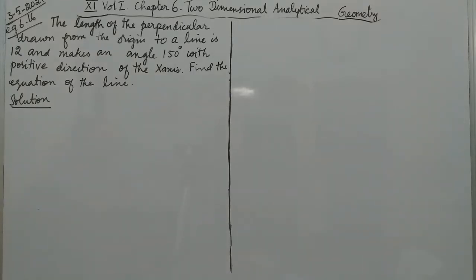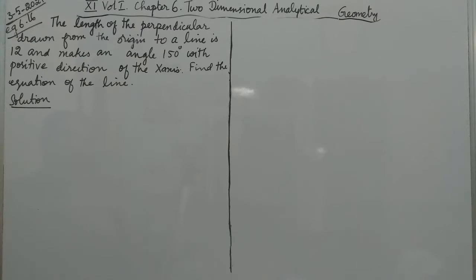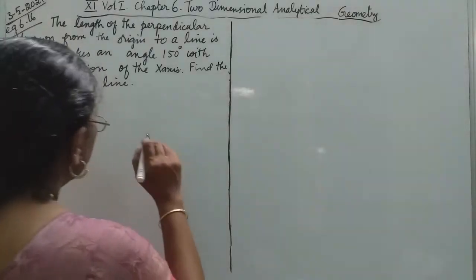Hello students. I am going to do example 6.16: The length of the perpendicular drawn from the origin to a line is 12 and makes an angle of 150 degrees with the positive direction of the x-axis. Find the equation of the line.